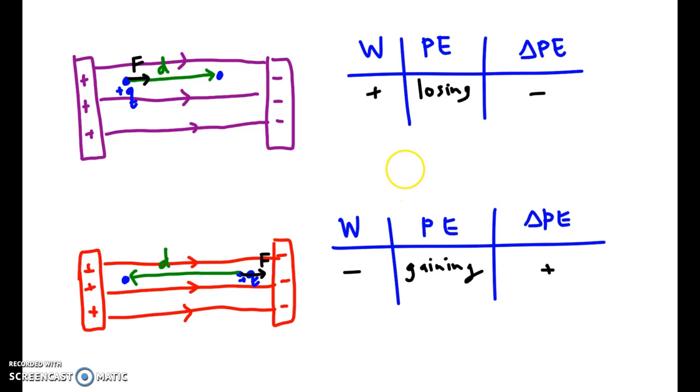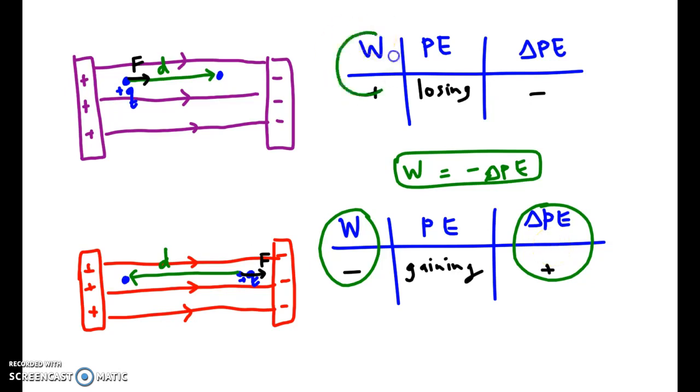We can set the two as opposites. And this equation is broadly true. This applies for both scenarios. It works in just about any case where you have potential energy. If the field does negative work, then that means you moved against the field. And you added potential energy to the charge. But if the electric field does positive work, then it moved with the force. It fell to where it naturally wants to go. And you lost potential energy.